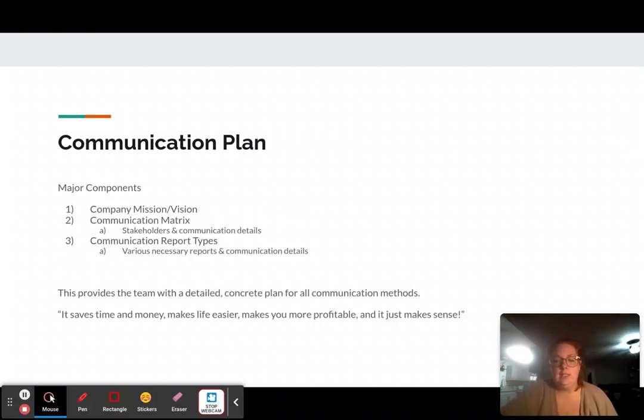Communication plan. This is major for our deliverables, right? The major components are going to be the company mission and vision. That's basically going to say how this project is going to apply to your company. Communication matrix. This is going to include a list of all the stakeholders and the communication details. How you're going to communicate, how often, what format you're going to use, email, meeting, etc.